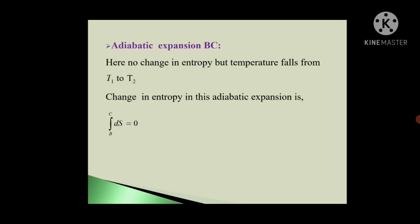Now second step, Adiabatic Expansion BC. Here, there will be no change in entropy, but temperature will fall from T1 to T2. Adiabatic Expansion, no heat can leave the system or no heat can enter the system. So Q is zero. So entropy is zero. So change in entropy for this Adiabatic Expansion is integration B to C, dS equal to zero.